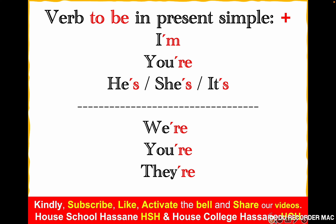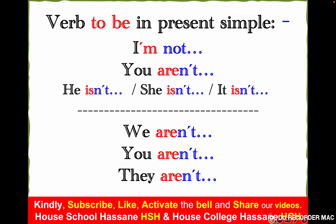Verb to be in present simple — positive: I am, you're, he's, she's, it's, we're, you're, they're. Negative: I am not, you aren't, he isn't, she isn't, it isn't, we aren't, you aren't, they aren't.